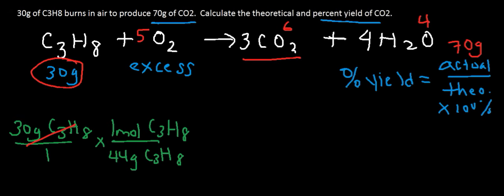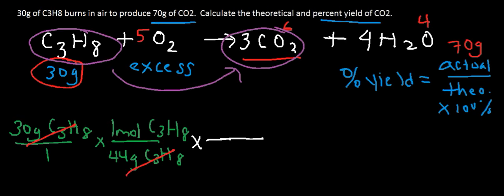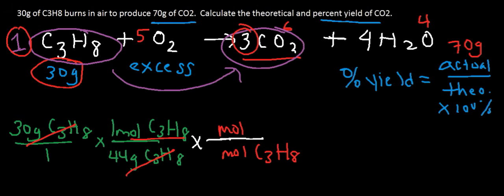We set up the conversion so the grams of C3H8 cancel. The next step is to change the substance — convert from moles of C3H8 to moles of CO2. Whenever you change from one substance to another, you use the molar ratio, which here is 1 to 3. For every 1 mole of C3H8 that burns, 3 moles of CO2 are produced. Since we have moles of C3H8 on the top left, we put it on the bottom right so they cancel, and moles of CO2 goes on top.